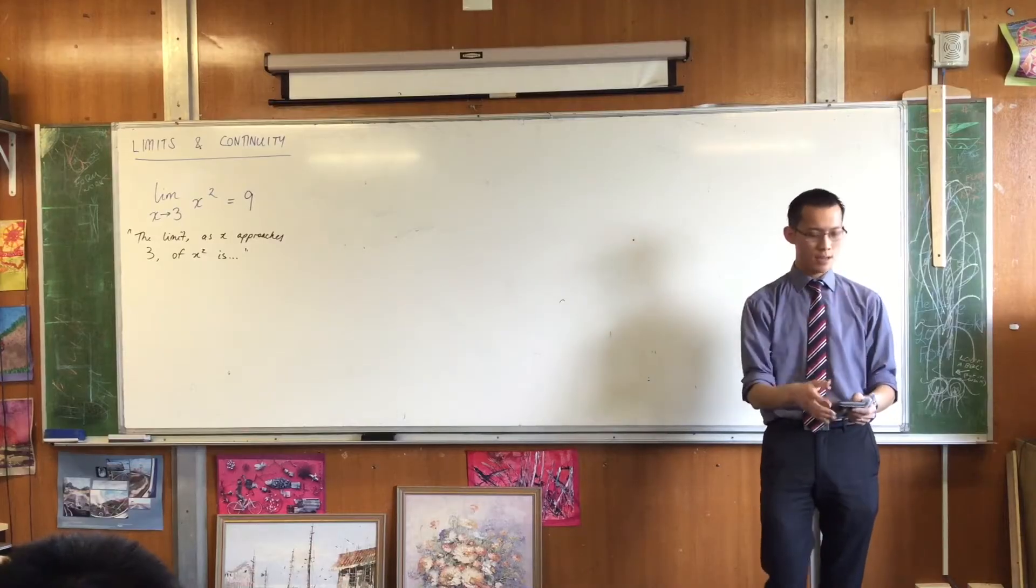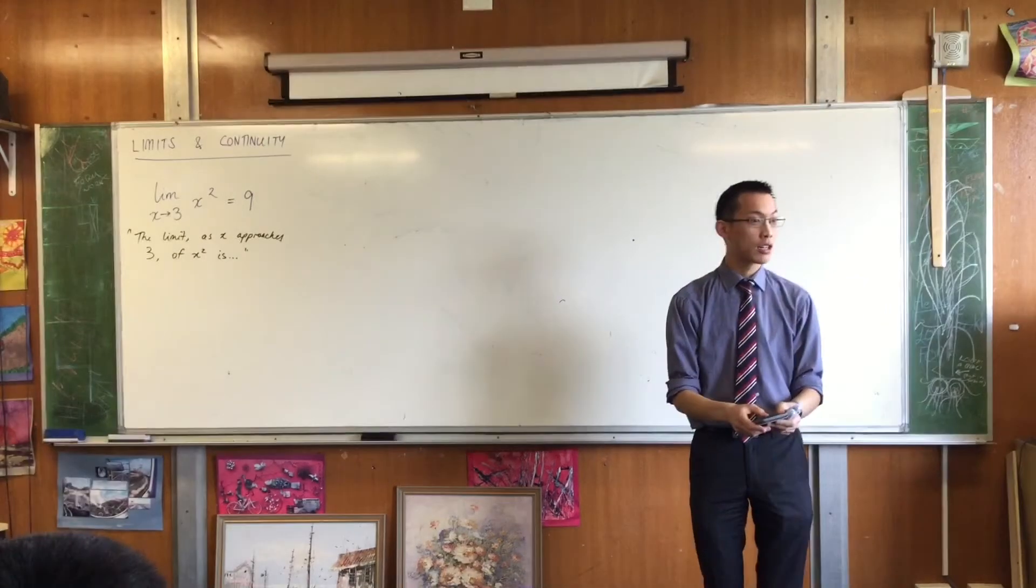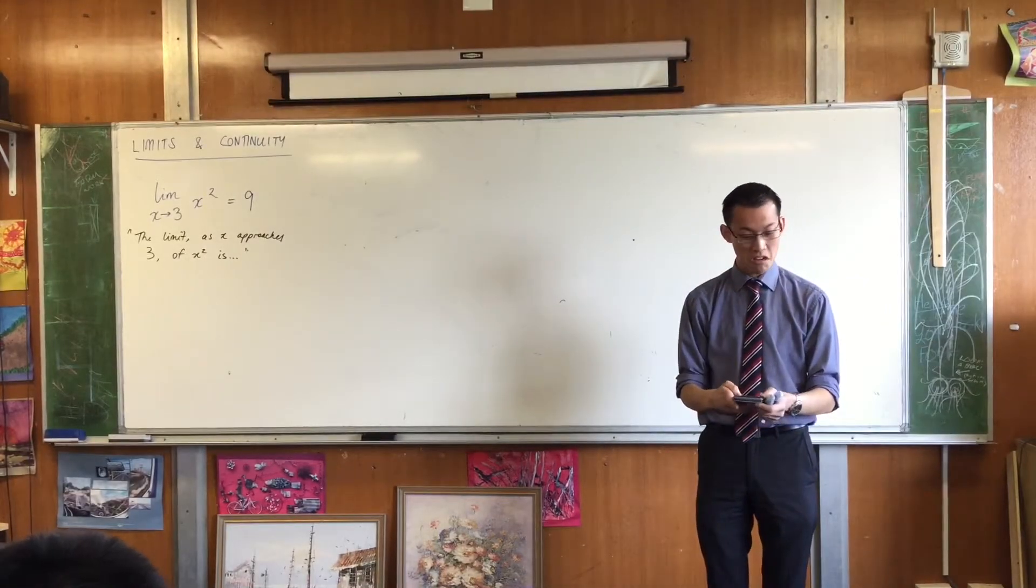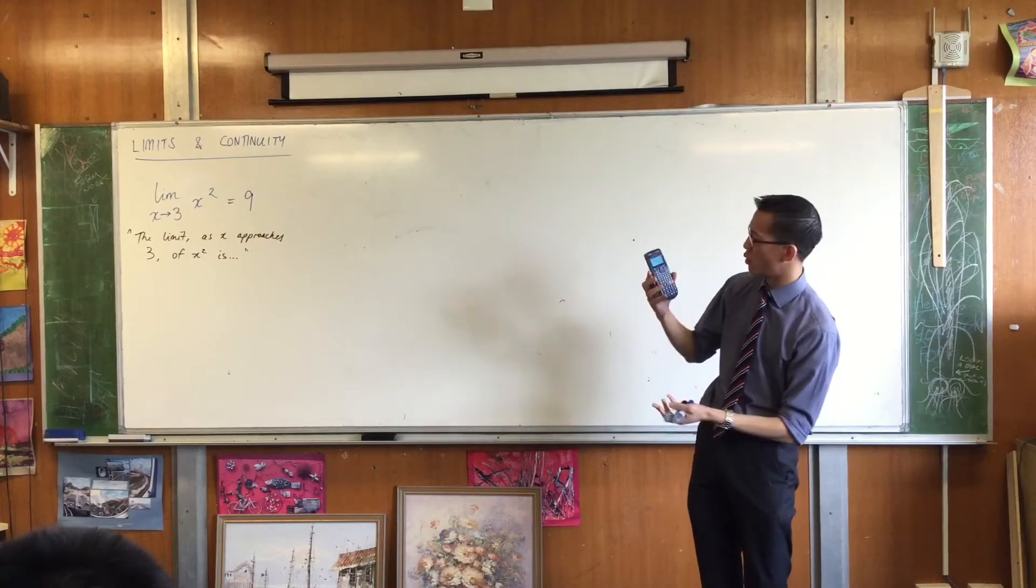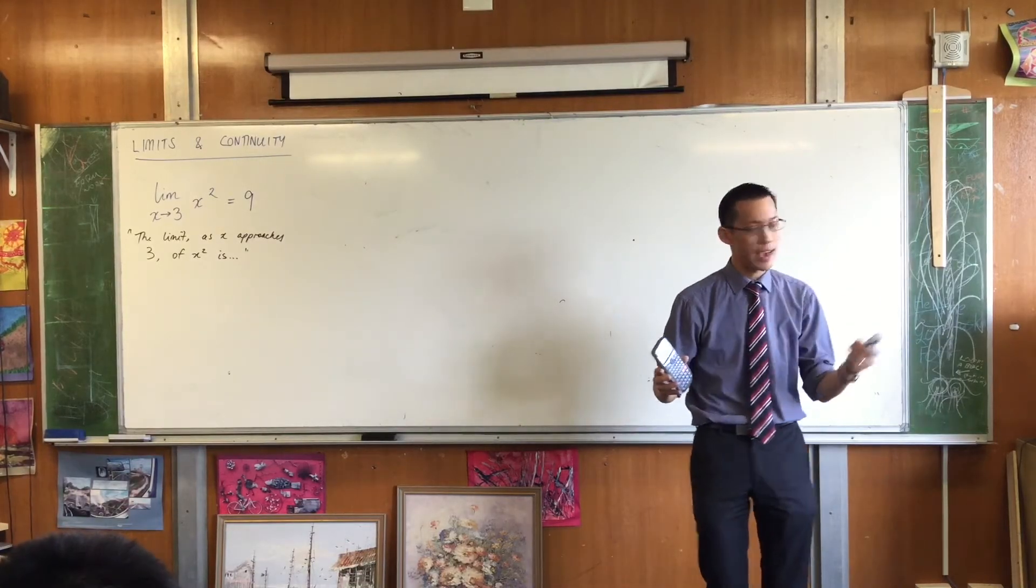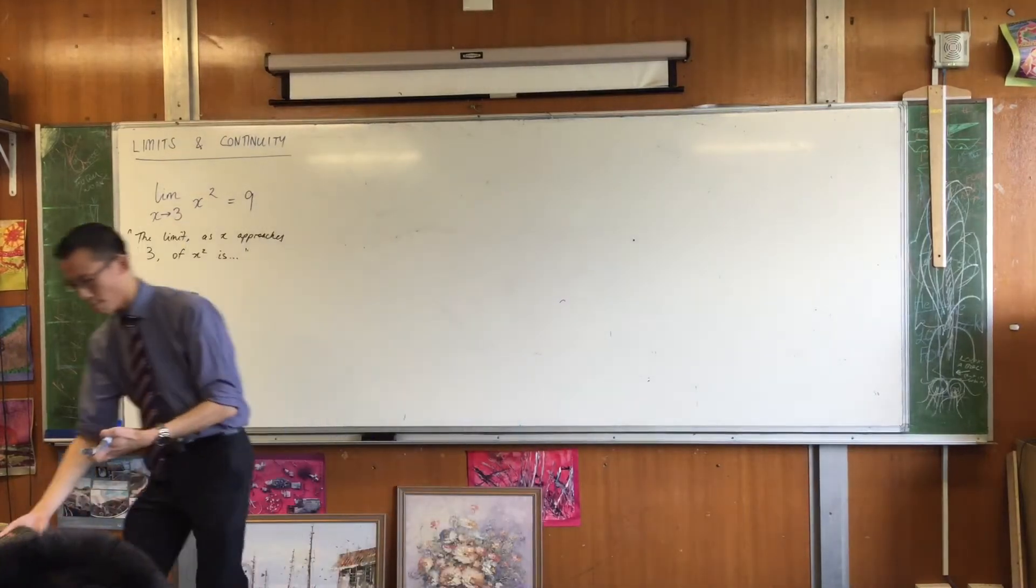So I'm getting to nine. If I put in numbers that are closer to three, like 2.99, I get 8.9401. And I can get as close as I like. That phrase is actually really important.